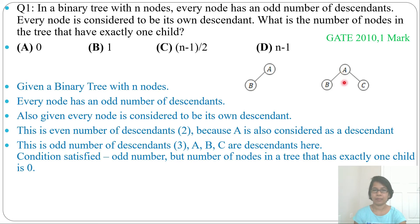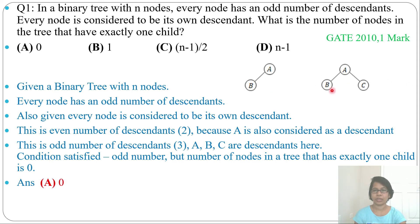The question asks for nodes with exactly one child and an odd number of descendants. Whenever a node has one child, the number of descendants is even — the child plus the node itself makes two — so it is not possible to have one child and an odd number of descendants. Therefore the answer will be zero. Going through these two diagrams: one child gives two descendants (even); two children gives three descendants like A, B, C (odd).